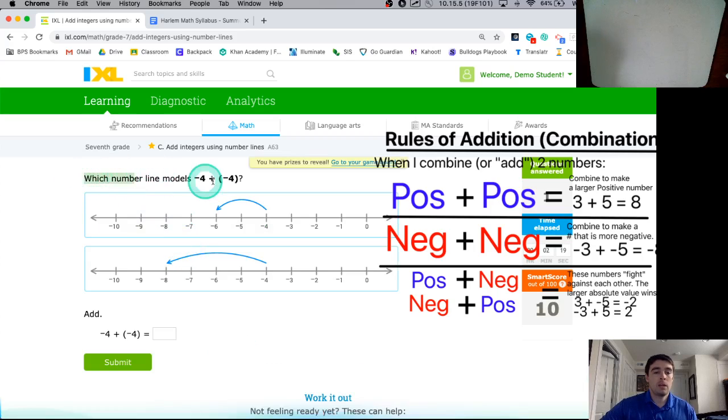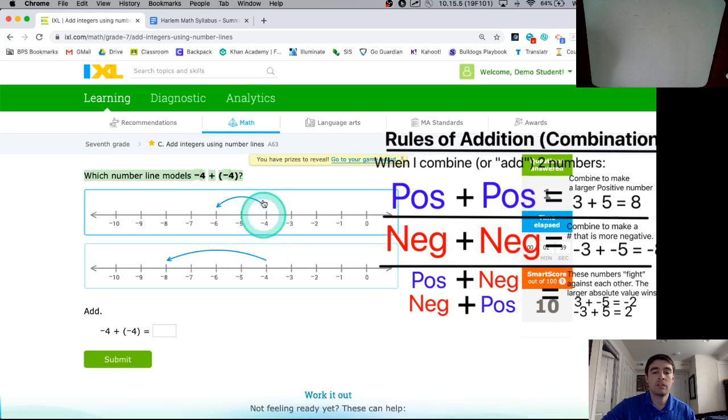Next up, they say which number line models negative 4 plus negative 4. So, I'm going to look for a number line that starts out at negative 4 and also then takes 4 more units away. Remember, whenever I add a negative, that's the same thing as taking something away. So, I'm going to look, both of these start out at a negative 4. They both seem to have this first piece correct. They model the negative 4. But then the first one here jumps back by 2 units, 1, 2, and the next one below it jumps back by 4 units from negative 4 all the way to negative 8. So, that's telling me that this one, the second one, models negative 4 plus another negative 4.